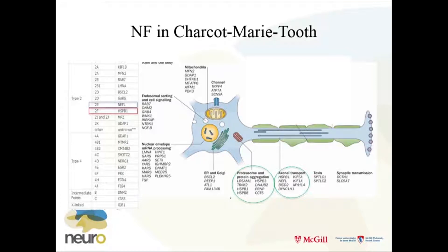Charcot-Marie-Tooth illustrates the point of neurofilaments and chaperones. Over 30 mutations cause CMT. I'm going to particularly refer to the NEFL mutations that Pascal talked about, and also HSPB1 — HSP27. Here's where they are, and TRPM2 as well — other HSPs affecting proteasome, protein aggregation, and axonal transport.